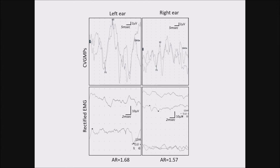Here's an example from a patient seen a few weeks ago, showing the C-VEMP response from the left ear and the right ear with the same sensitivity. The response on the left looks larger than on the right, apparently indicating a larger amplitude on the left. But this is not true — when recording the EMG amplitude on each side, the EMG on the left is larger than on the right. When you calculate the amplitude ratio between C-VEMP and EMG, the ratios are similar: 1.68 versus 1.57. This is, in fact, a normal study. Without measuring the EMG, you would have incorrectly concluded that the right ear had a lesion.